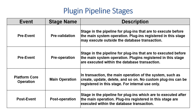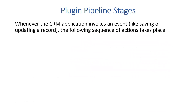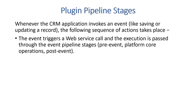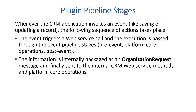Now we will look at the sequence of actions that take place when the CRM application processes an event like saving or updating a record. The event triggers a web service call, and execution is passed through the event pipeline stages: pre-event, platform core operation, and post-event.